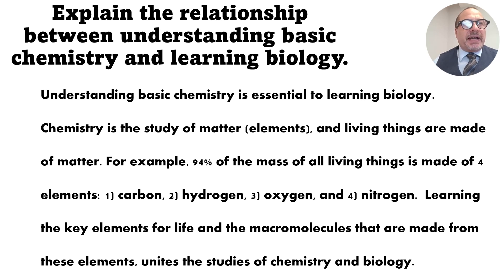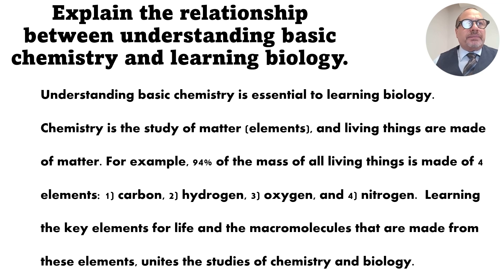Notice how those terms have been tied into the second sentence. The third sentence begins with 'For example: 94% of the mass of all living things is made of four elements — one carbon, two hydrogen, three oxygen, and four nitrogen.' We know this is our example sentence. What is it an example of? It's an example of the matter that living things are made from. Notice how the previous sentence ended with 'living things are made of matter' and then the next sentence followed with an example of that matter.